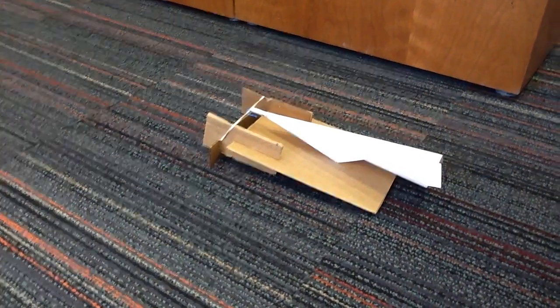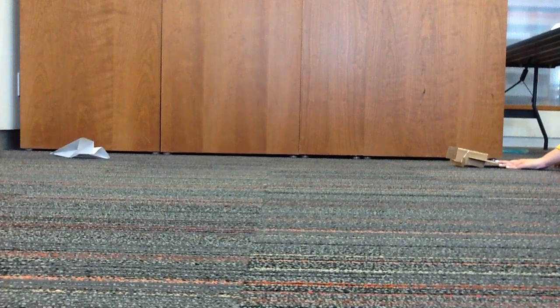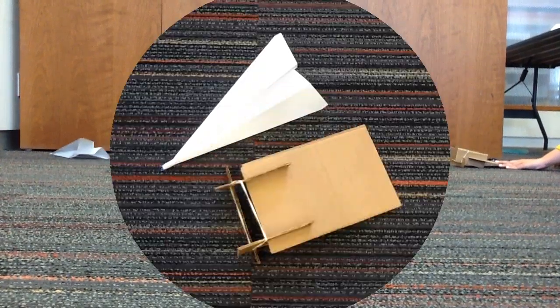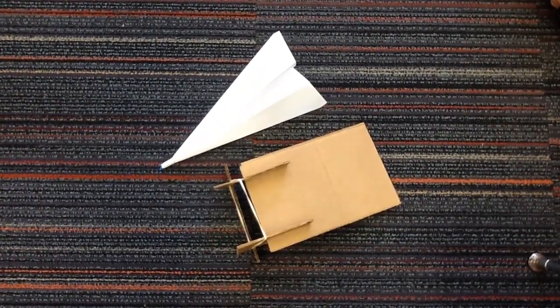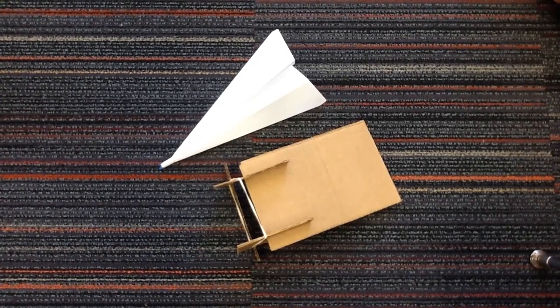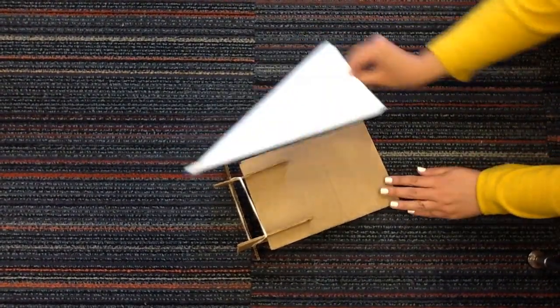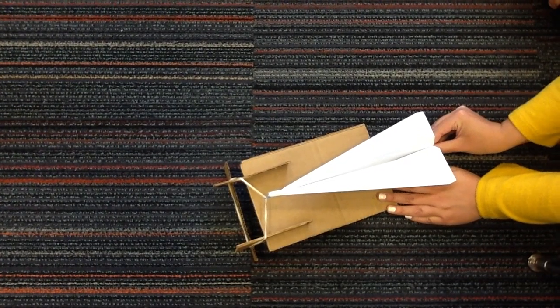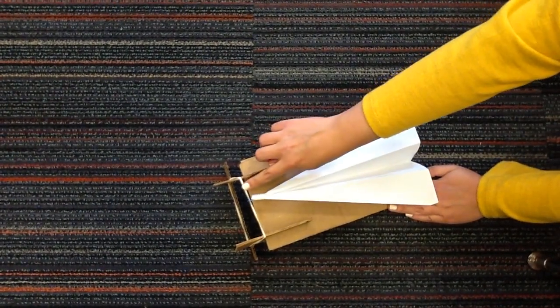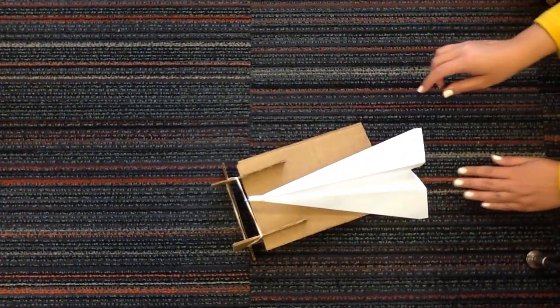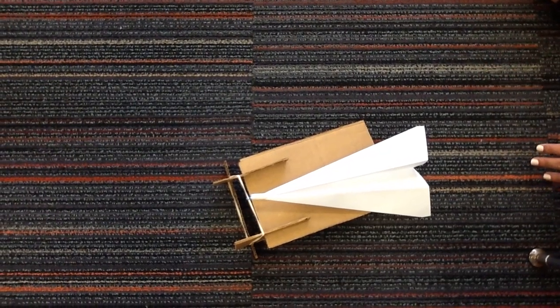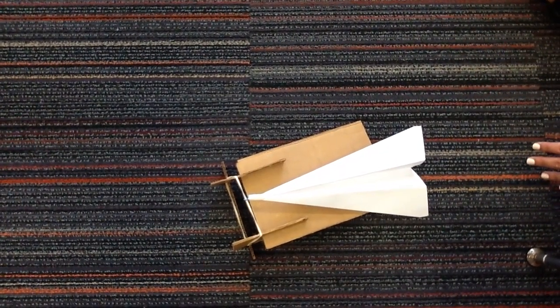Now it is time to test out our paper airplane launcher. Wow, our airplane went super fast and really far. That's because when you pulled the airplane back, the stored energy from the rubber band created so much energy that when it was released, the airplane was able to fly so much faster and farther.